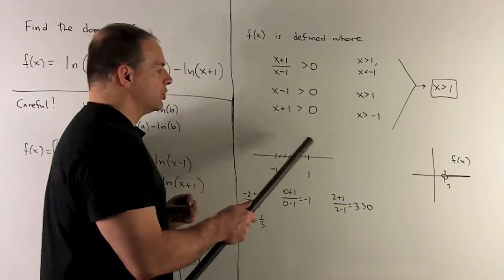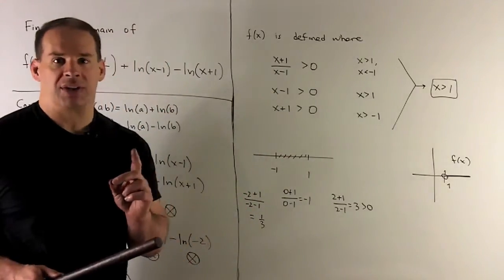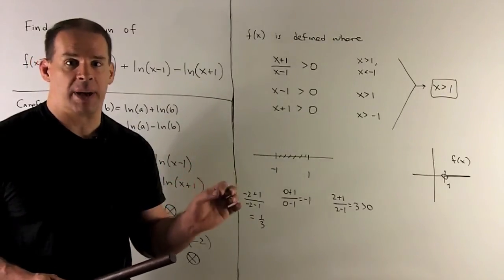Then I'll try 2 in this far region. So we'll have 3 over 1. That's positive. So that whole region is going to be good. The whole region is positive.